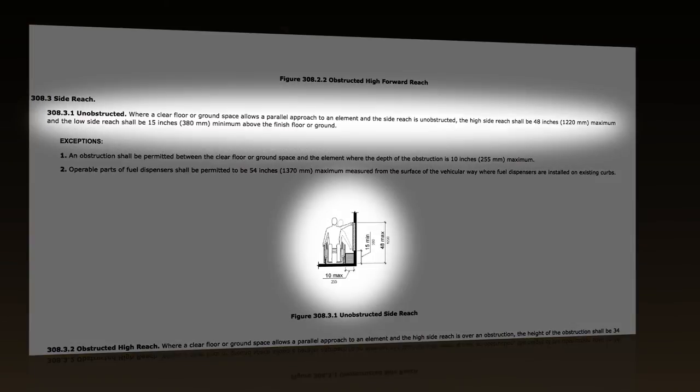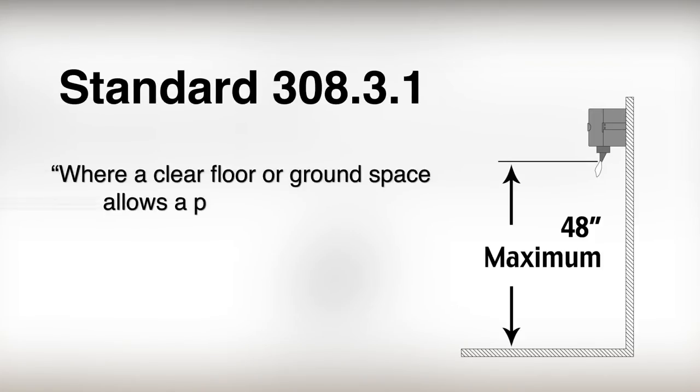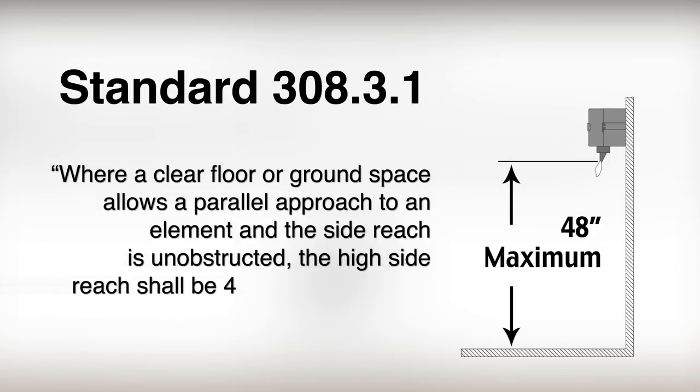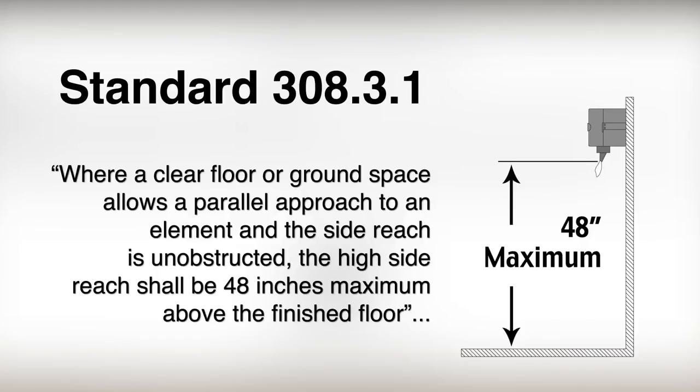For an installation with no obstruction, ADA standard 308.3.1 states: where a clear floor or ground space allows a parallel approach to an element and the side reach is unobstructed, the high side reach shall be 48 inches maximum above the finished floor.